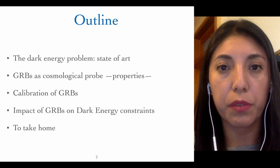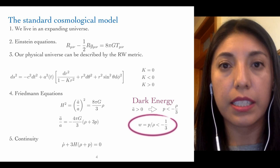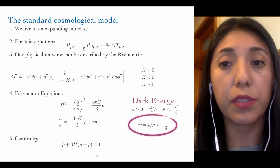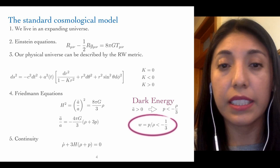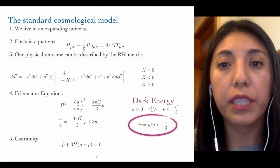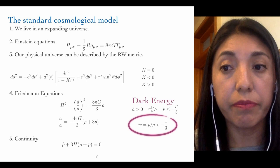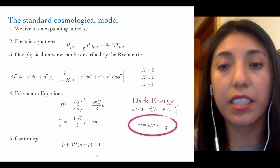Let me start with the state of the art of the dark energy problem. We know that our universe is an expanding universe, and we can describe this expanding universe by the Einstein equations of general relativity and by the Robertson-Walker metric, from which the Friedmann equations can be derived. From these equations, we have the description of the contents of our universe, and we can see that we have a positive acceleration. This equation implies that the parameter of the equation of state is less than minus one-third. While this is an open question, we don't know what dark energy is.